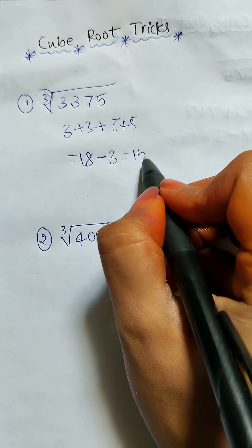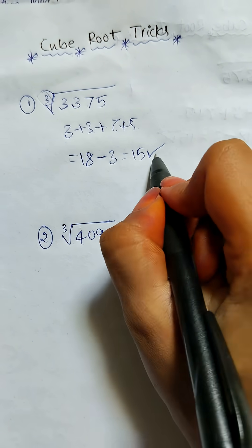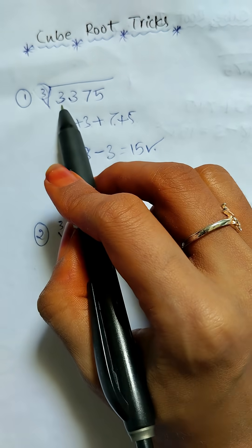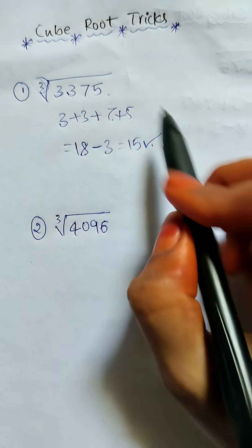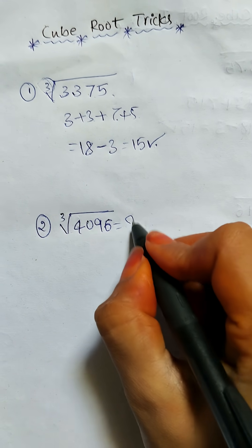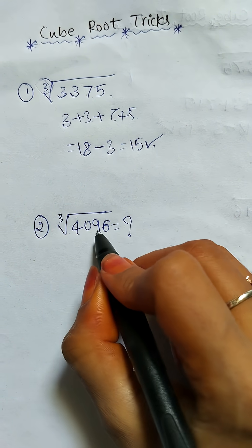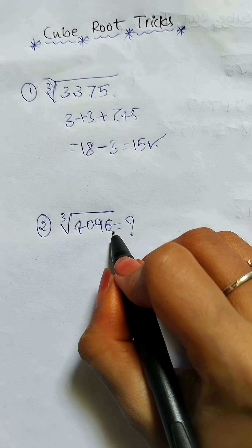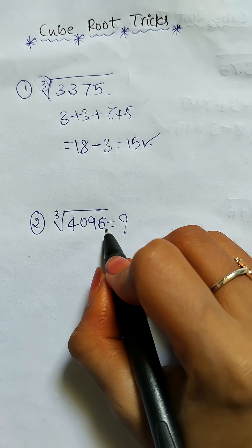So 15 is the final result—the cube root of 3375 is 15. Now do the same for this cube root of 4096 and let me know the result in the comment section. Thank you for watching.